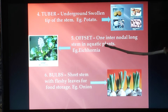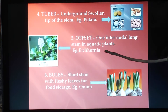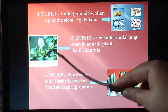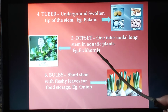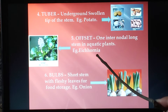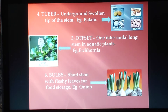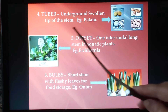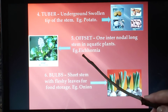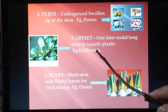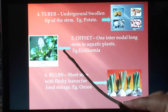The next method is offsets — one internodal long stems found in aquatic plants. The best example is Eichhornia. This plant grows in water bodies and has become a great aquatic weed, dominating entire water bodies. It was introduced in India for its beautiful flowers but is now known as the 'Terror of Bengal' because it dominates water bodies and cuts off the oxygen supply to aquatic organisms, causing them to die.